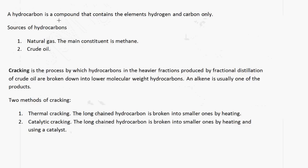You need to be able to explain what a hydrocarbon compound is. A hydrocarbon compound is a compound that contains the elements hydrogen and carbon only — hence the term hydrocarbon. There are various sources of hydrocarbons. We can get hydrocarbons from natural gas — the main constituent of which is methane — and we can also get hydrocarbons from crude oil.